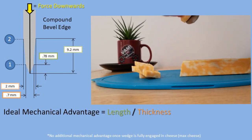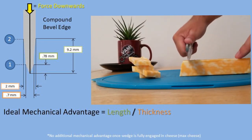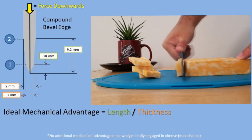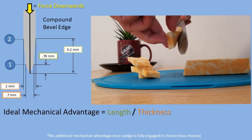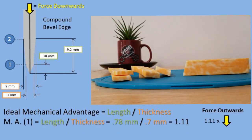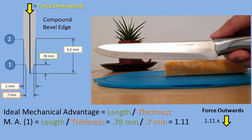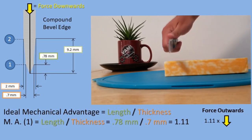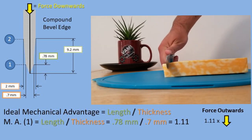Now to find the ideal mechanical advantage, we will be taking the length or distance traveled down on the cut divided by the thickness of the blade at the desired point. So plugging in the length and thickness we measured for point 1, we get a mechanical advantage of 1.11. This means that the force outwards is 1.11 times the force that is being pushed down on the knife.